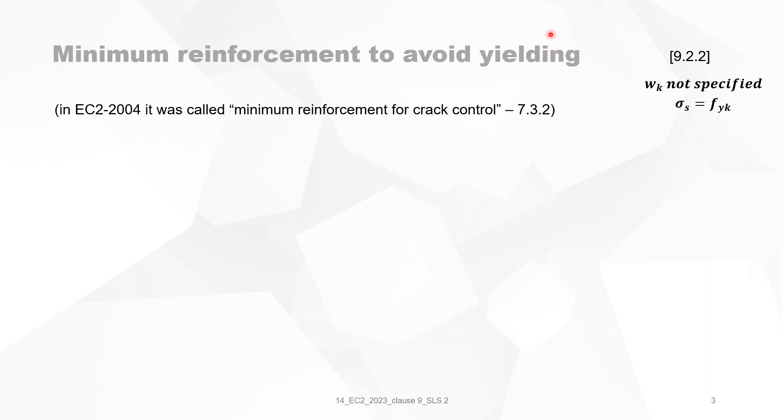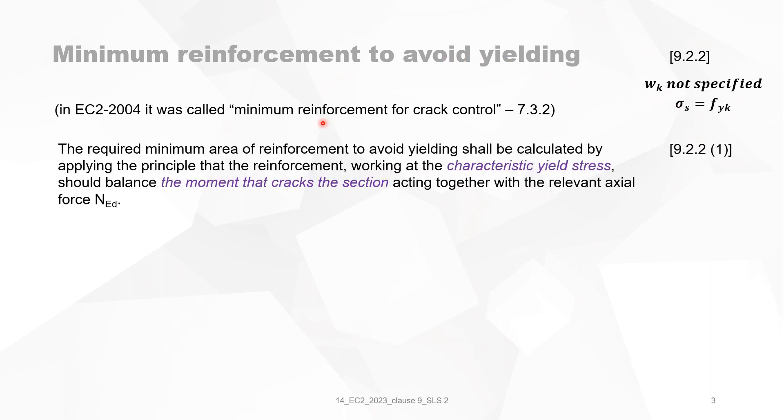This is now confusing. Why do they call it now to avoid yielding and what does it mean? I'm not sure what it means. Minimum reinforcement to avoid yielding. At the same time, the steel is yielding. So, what's the meaning of this? It's not very clear.